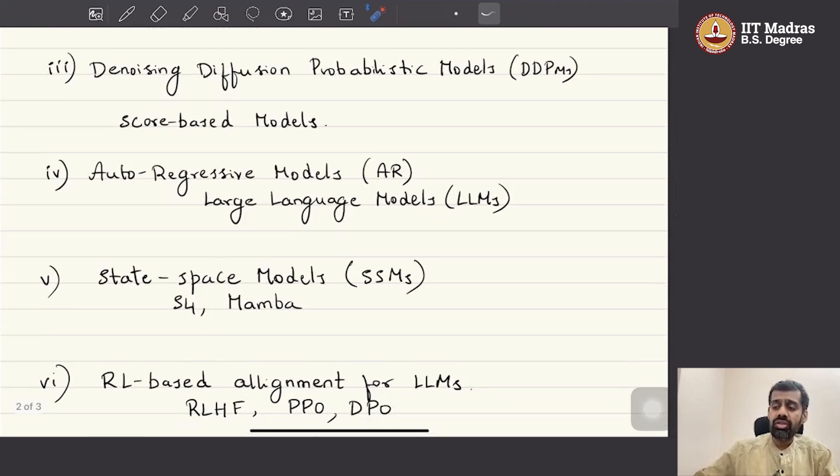Then, we will move on to another class of generative models called Auto-Regressive Models, abbreviated as AR Models. The most famous large language models which are the fundamental components of all these generative AI, commercially available generative AI platforms such as GPT and Google's Gemini and models like Claude and Qwen. All of these are mostly Auto-Regressive Models which are also known as large language models. We will be looking at Auto-Regressive Models as well.